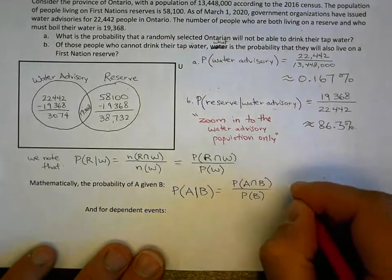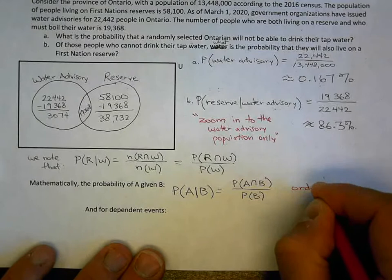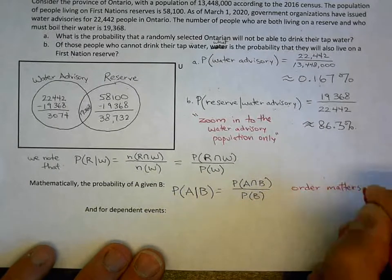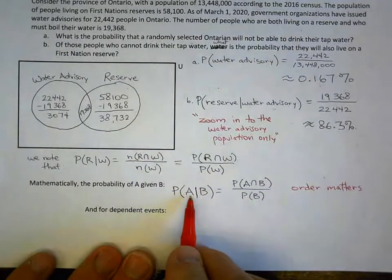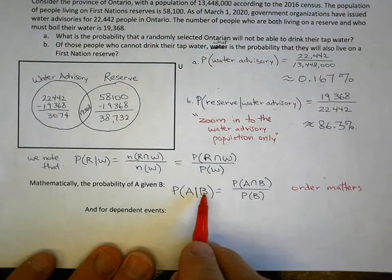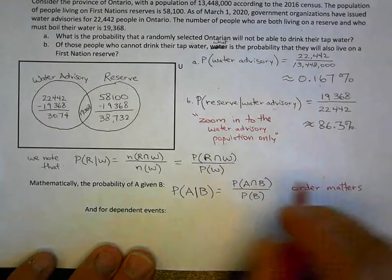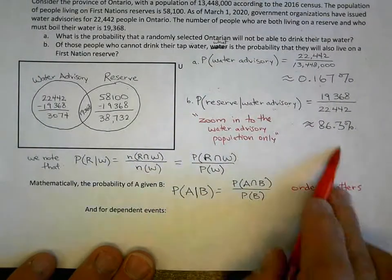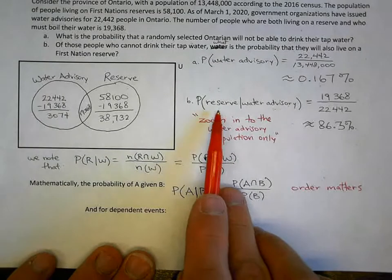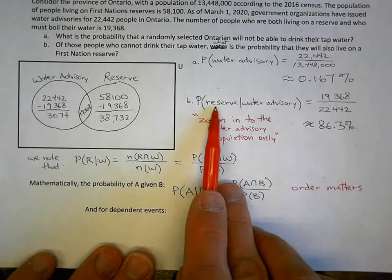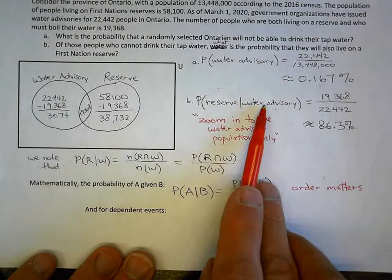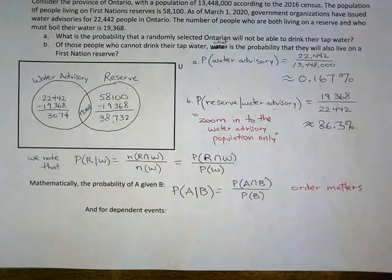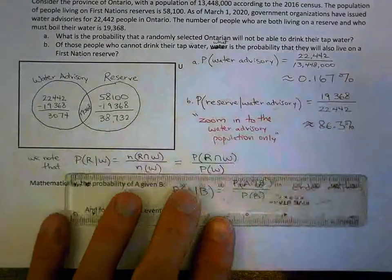This follows that you could write it with probability as well: the probability of the reserve and water populations over the probability of water. Through this activity we've discovered the way of finding conditional probability. The probability of A given B — remember, that vertical bar means 'given' — is the probability of A intersect B over the probability of B. Order matters here: this formula depends on whether you have A first or B first.